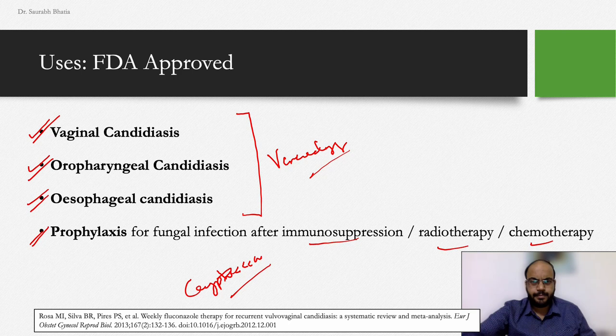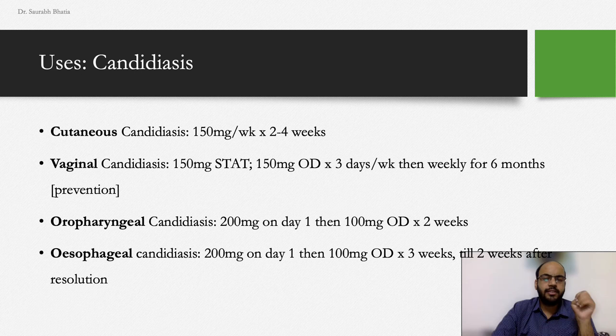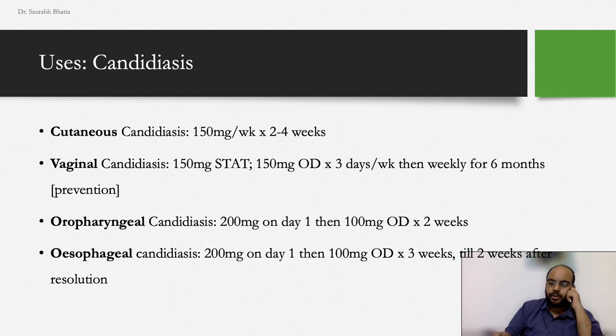Regarding doses for candidal infections — note this is directed at residents and not lay persons; always consult a dermatologist or venereologist for treatment. For cutaneous candidiasis: 150 mg per week for two to four weeks depending on response. For vaginal candidiasis: 150 mg as a single stat dose, as used in syndromic management.